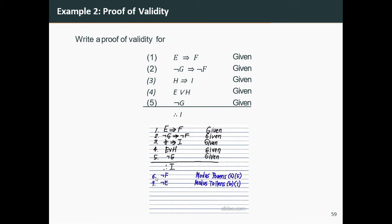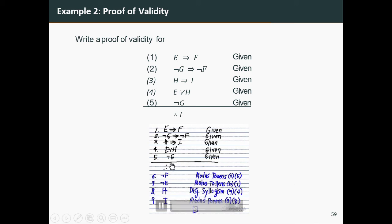Next, using statement four and statement seven, we can conclude h. The reason is disjunctive syllogism applied on statements four and seven. Then, using statement three and statement eight, we can conclude i. The reason is modus ponens applied on statements three and eight. We have arrived at the destination, so the proof is done. This ends the proof of validity for example two.